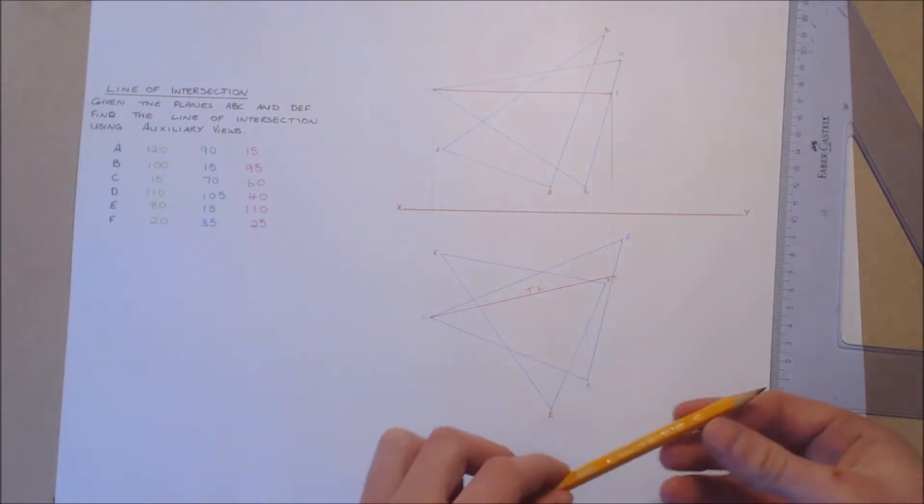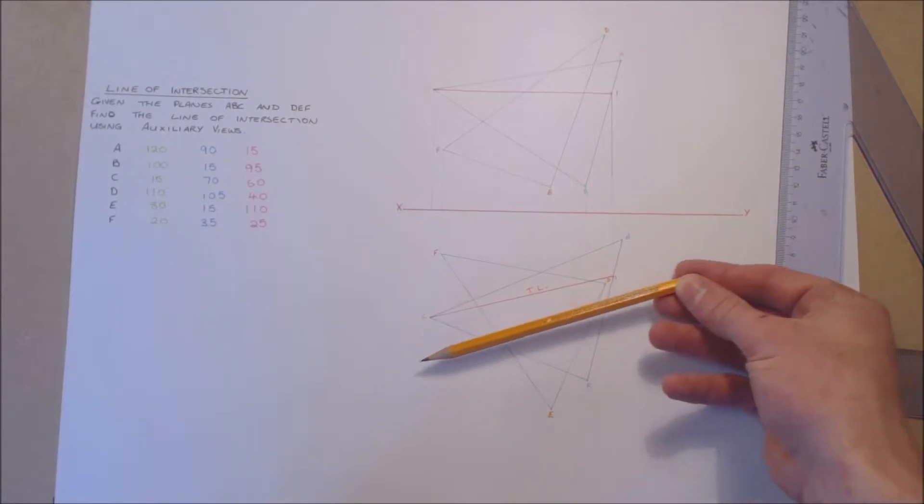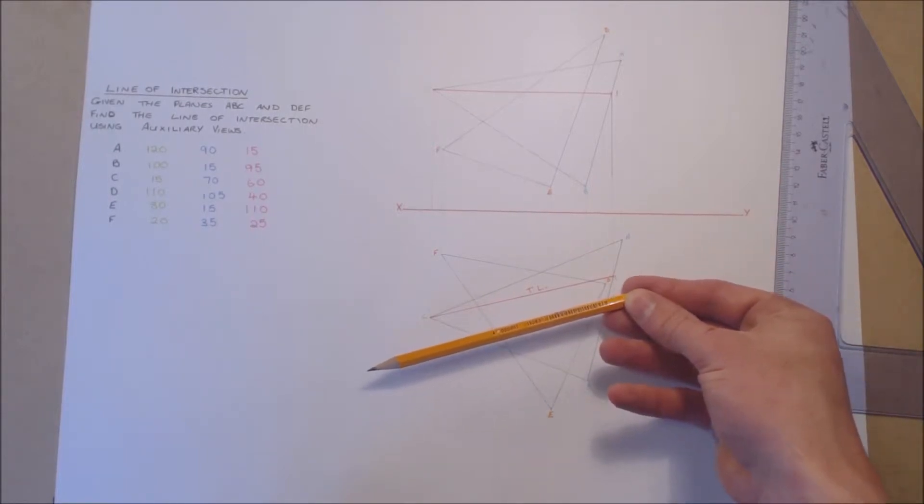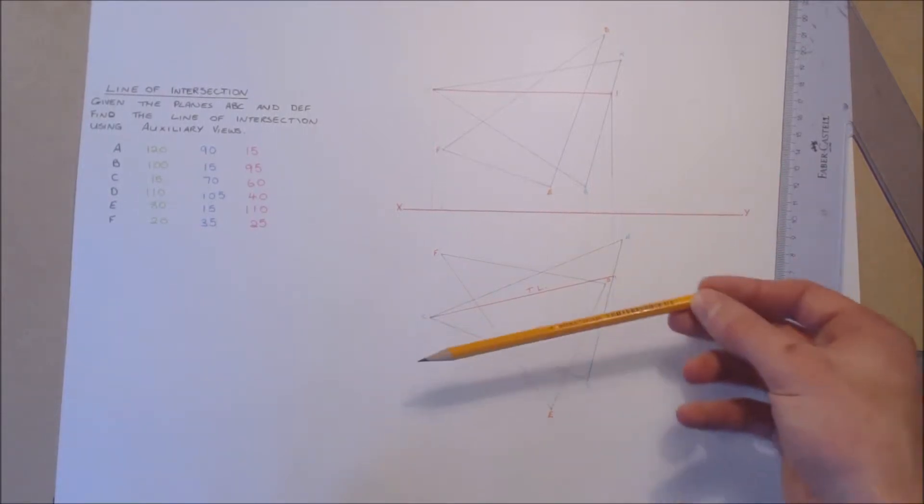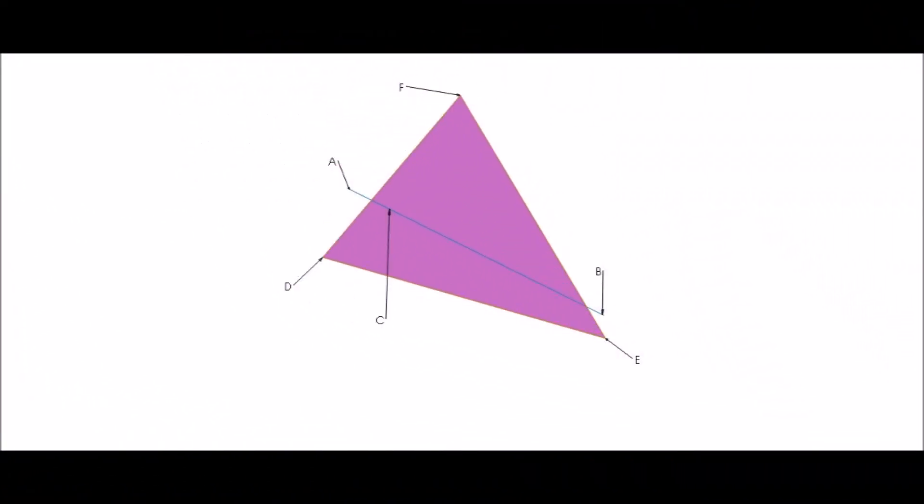When you look parallel to a true length, it gives you an edge view. Therefore, we will project an auxiliary view looking along our true length. The SolidWorks model shows us an edge view of the plane ABC.